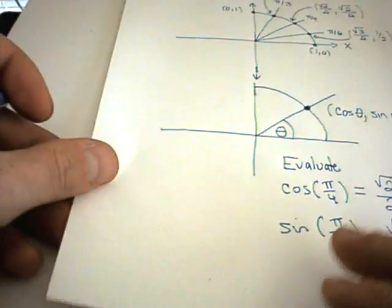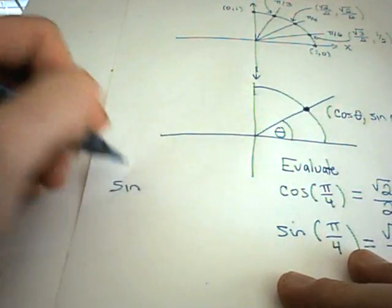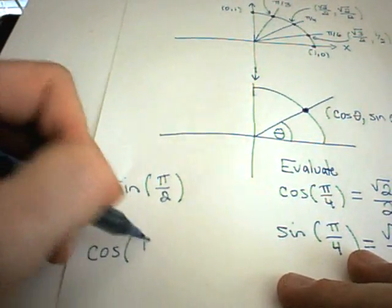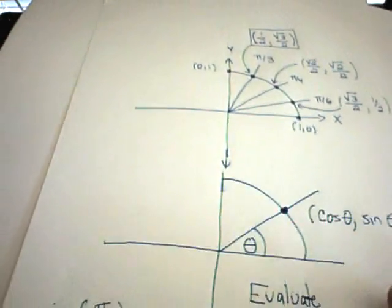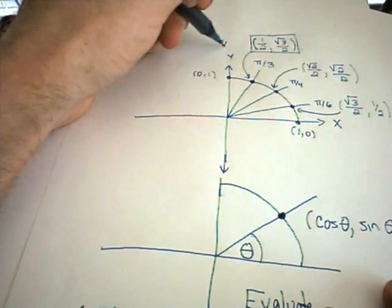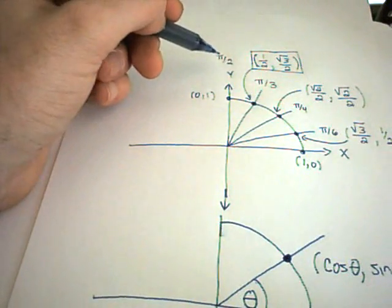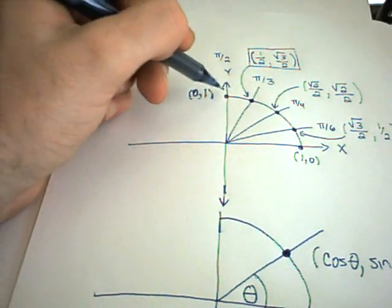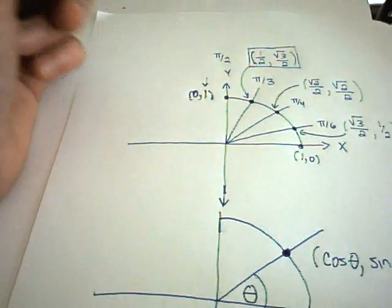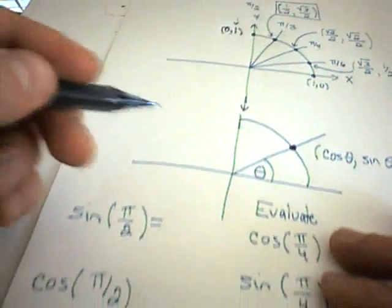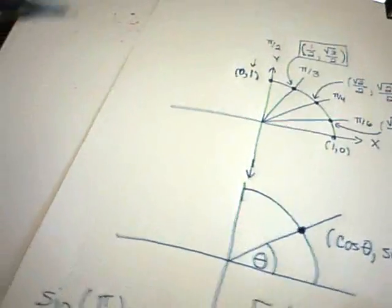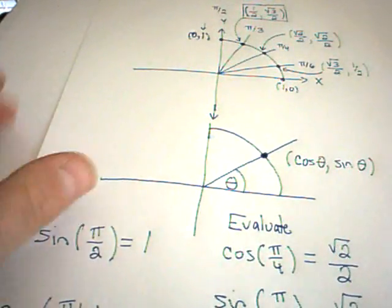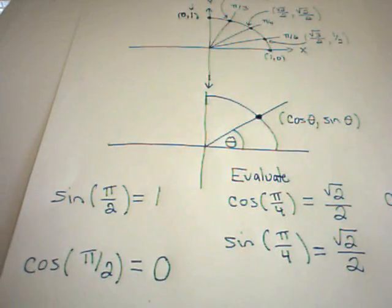Let's do one more. Suppose we wanted to figure out sine of π over 2 and cosine of π over 2. The angle π over 2 is at the top of the circle, so at π over 2 we have the point 0 comma 1. Sine of π over 2 represents the y-coordinate, which is 1. And the x-coordinate that goes with π over 2 is 0. And that's how we evaluate sine and cosine.